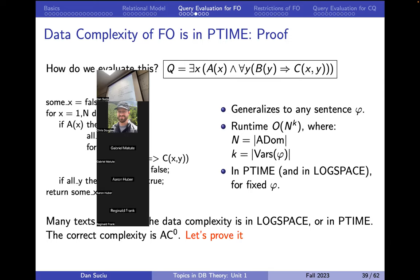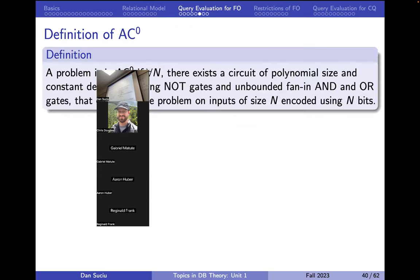So that was the proof that for every first-order formula, its data complexity is in polynomial time — and actually even in log space. But I claim it is even lower: it is in AC0. Let's untangle AC0. What is AC0? It is a class of problems where, for every problem size n, there exists a circuit with the following properties: the size of the circuit is polynomial in n, and its depth is constant — independent of n. The circuit has AND gates and OR gates with unbounded fan-in, and NOT gates wherever needed.